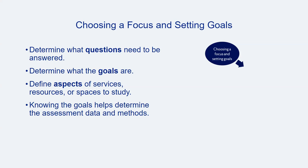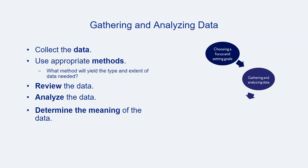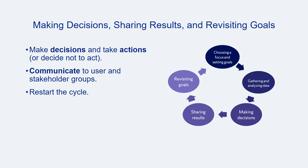In the first stage of the assessment cycle, library assessment practitioners determine what questions need to be answered, discern what the goals are for both the service, resource, or space being assessed and the assessment project itself, and pin down the aspects of interest. Knowing the goals of an assessment is essential in making subsequent choices. In the second stage, practitioners collect data using appropriate methods, review and analyze it, and derive meaning from it. In the later stages, practitioners collaborate with colleagues, communicate with users, partners, and stakeholders, make decisions, take actions, and revisit goals to improve services, resources, and spaces, restarting the cycle for another iteration.